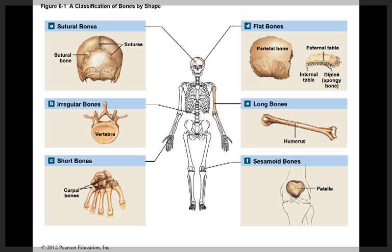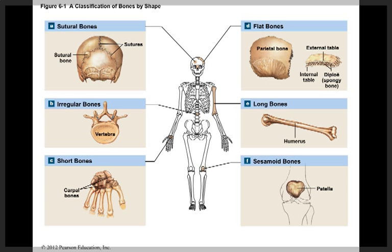We classify bones according to their shapes. There are several different bone shapes: sutural bones, irregular bones, short bones, flat bones, long bones, and sesamoid bones, and we'll discuss each one of these.